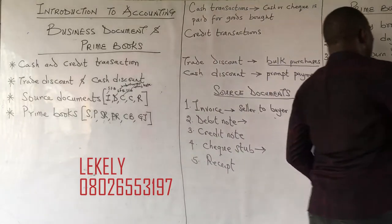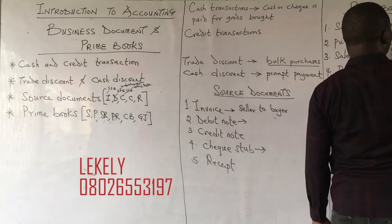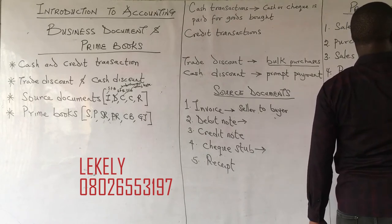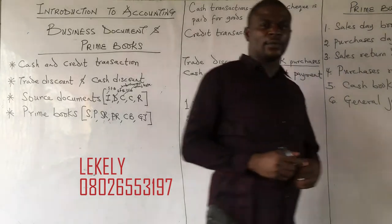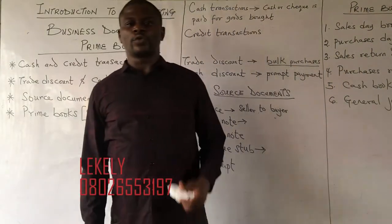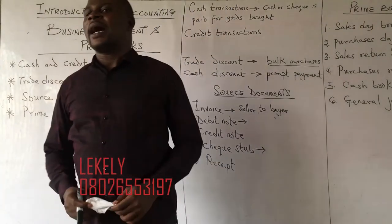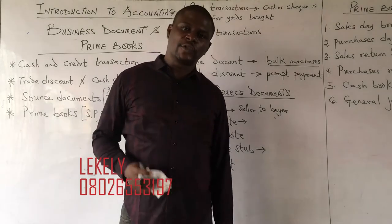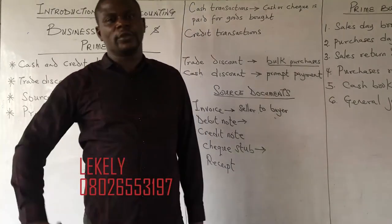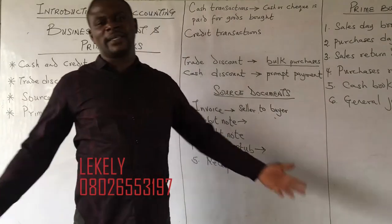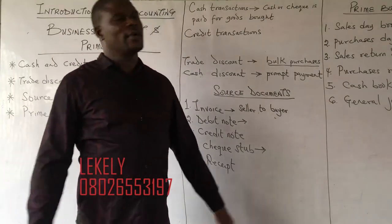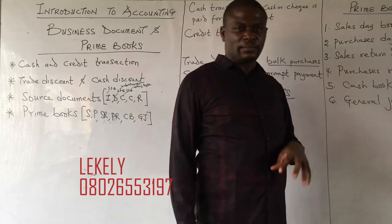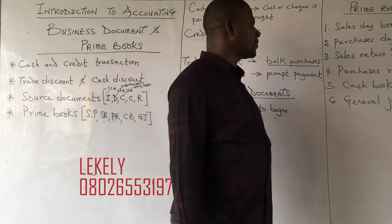The purchases day book is the book used to record credit purchases. As a business, it is possible that you also buy things on credit, and you need your own record. For example, if you bought a table from Mr. Johnson worth five thousand and haven't paid, you record it so that when he comes you have proof of the amount owed.